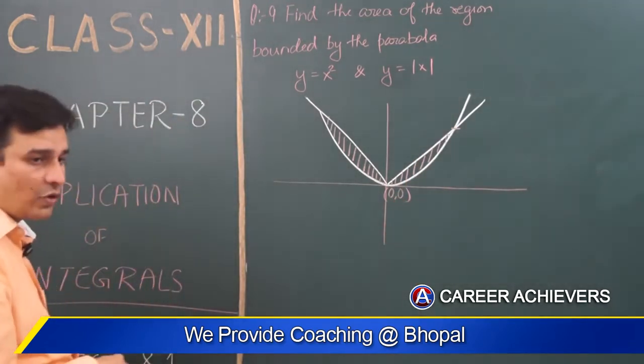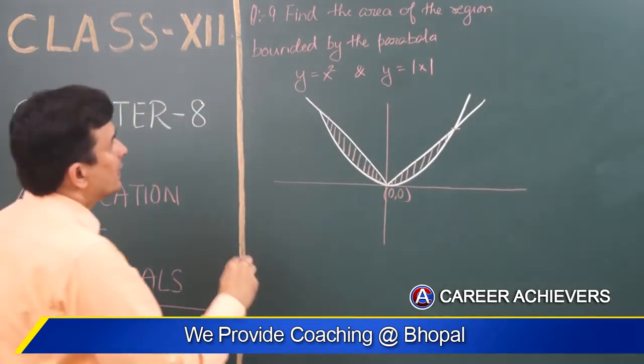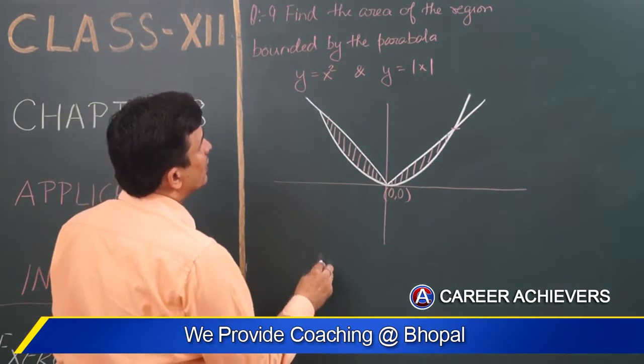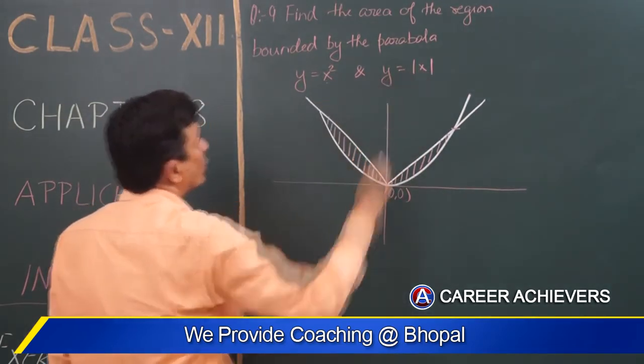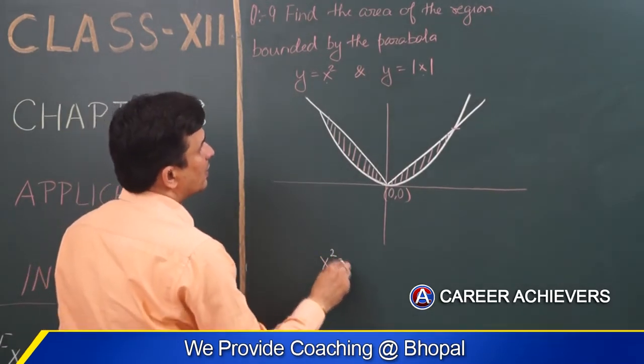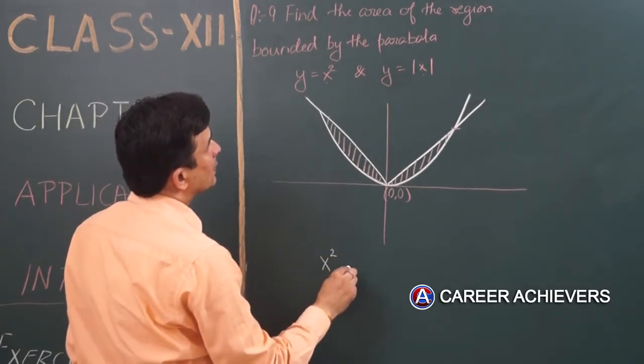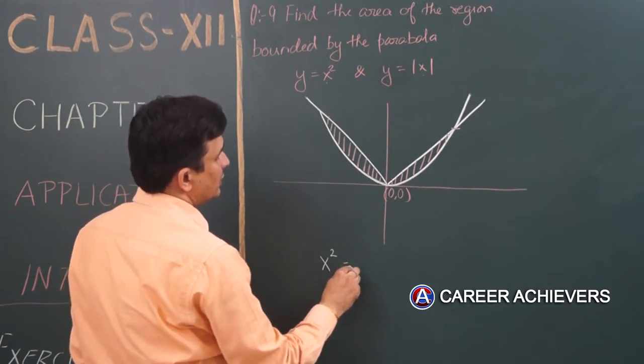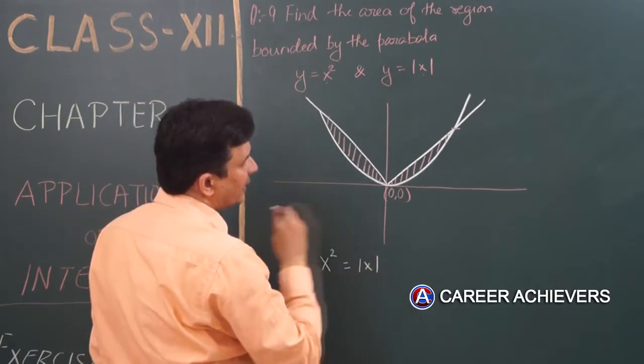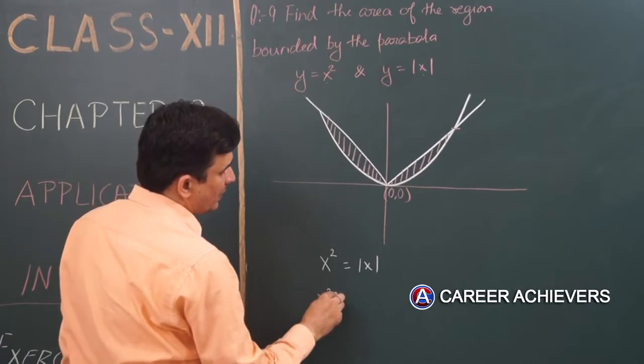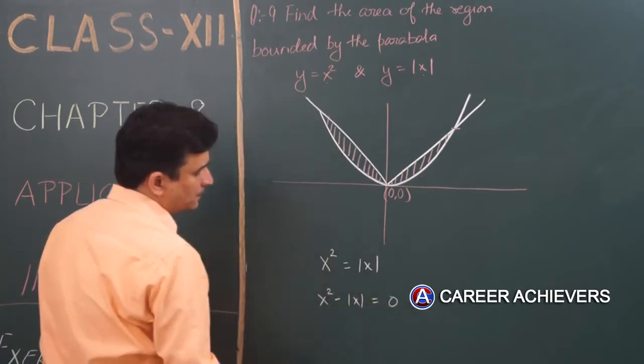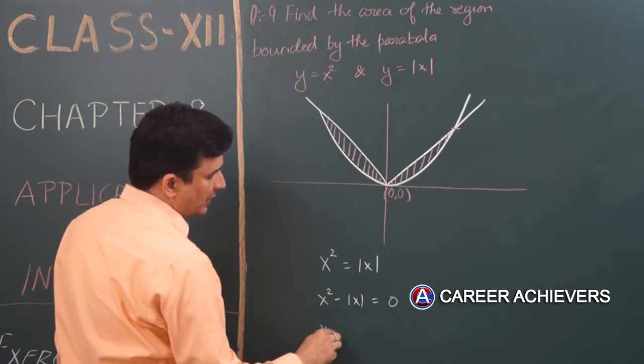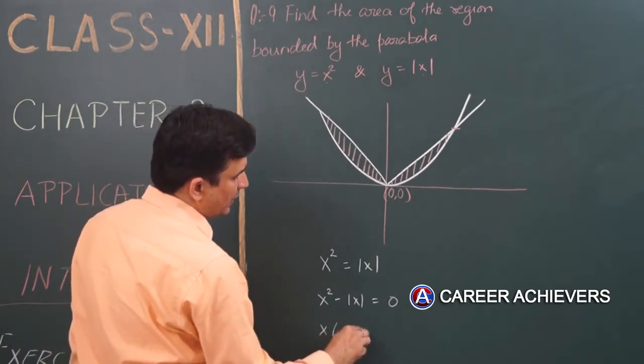This is the coordinates, point of intersection. y equals x square or y equals mod of x, so x square is equals to mod of x. x square minus mod of x equals to zero, x common liya, x minus one.